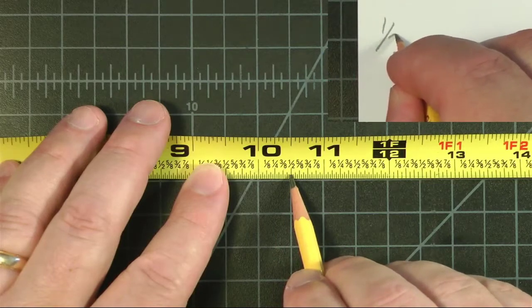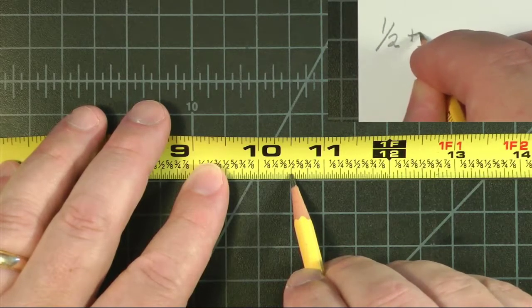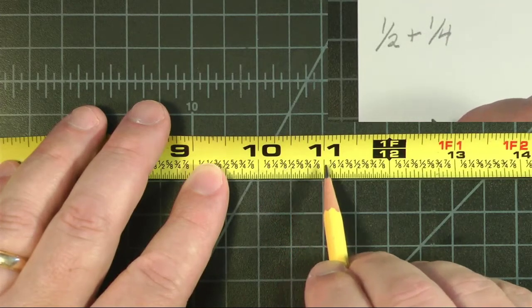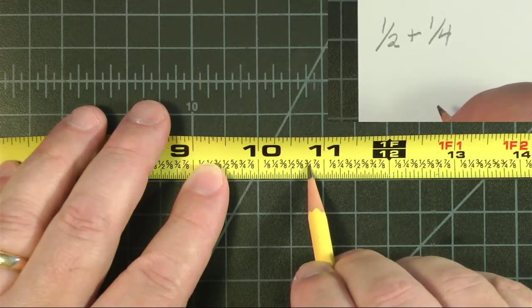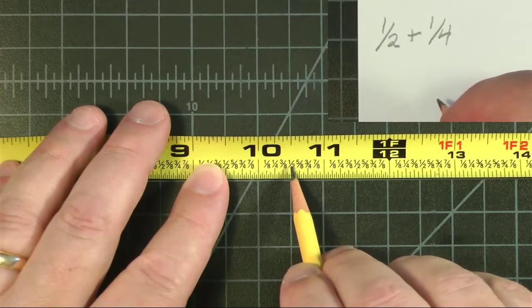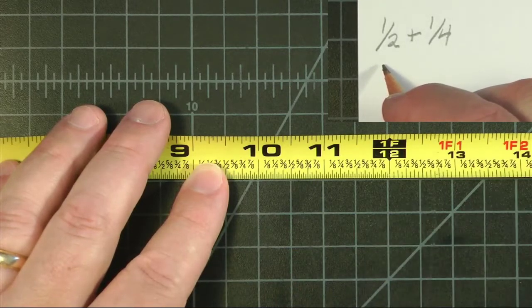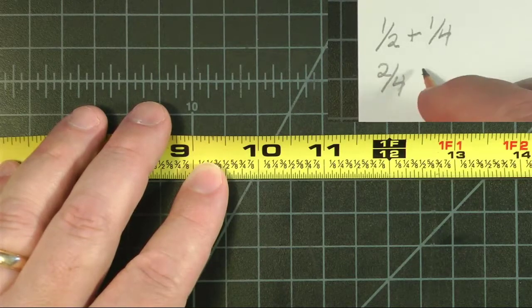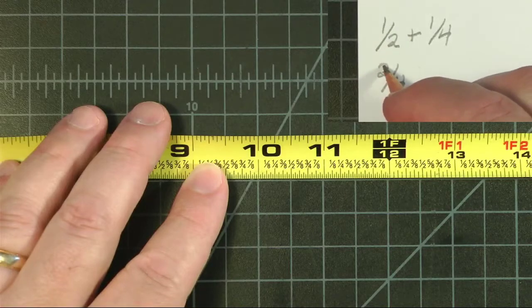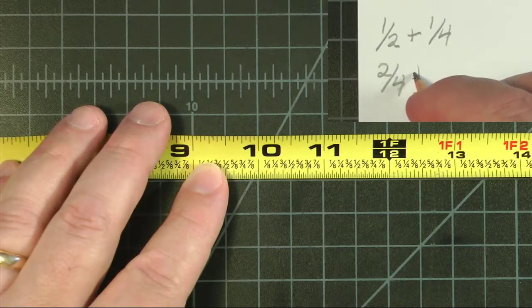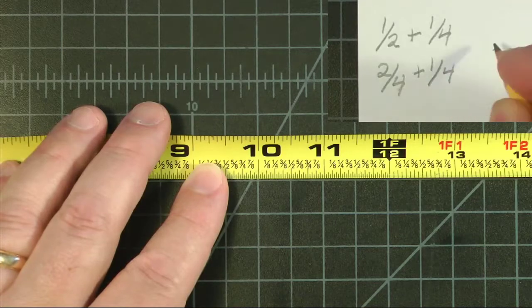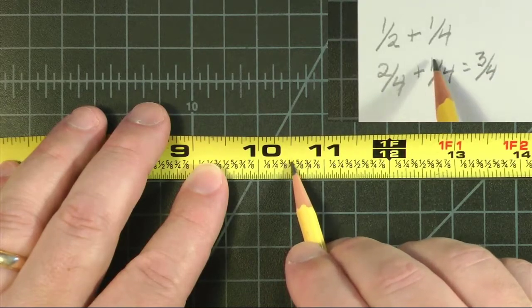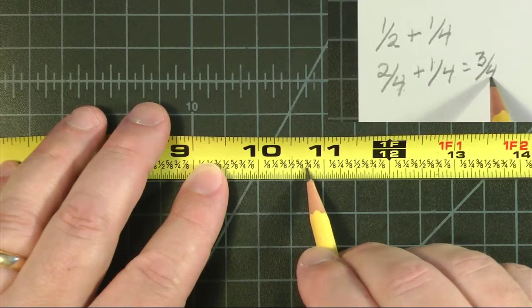Let's do half plus a quarter. Well we already know that between half and zero is a quarter, and between half and the full inch there's another quarter, because it's 3 quarters. So the half plus a quarter is 3 quarters. Let's do that on paper. We change the half to 2 quarters by doubling the bottom and the top. So we have 2 quarters plus 1 quarter equals 3 quarters. Just like here, 2 quarters or a half plus a quarter is 3 quarters.